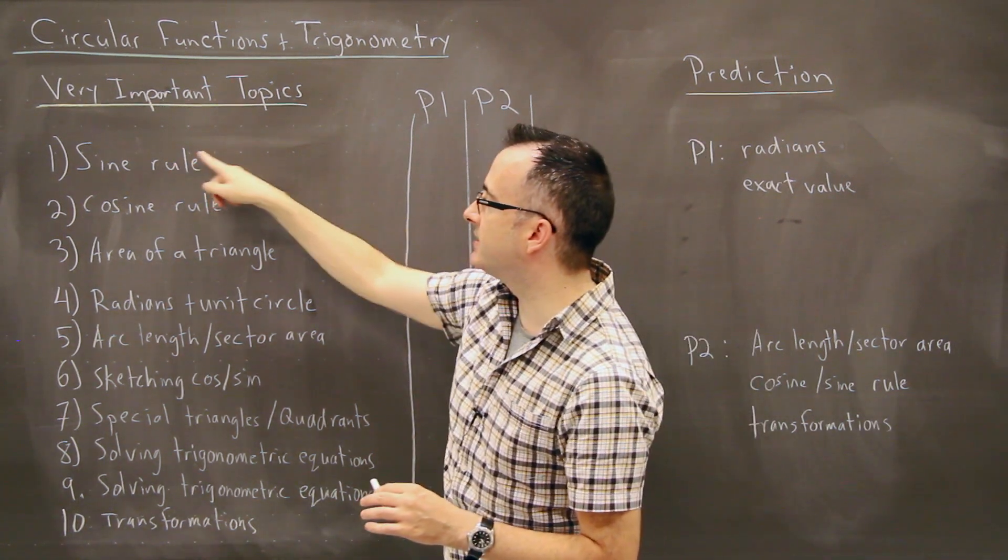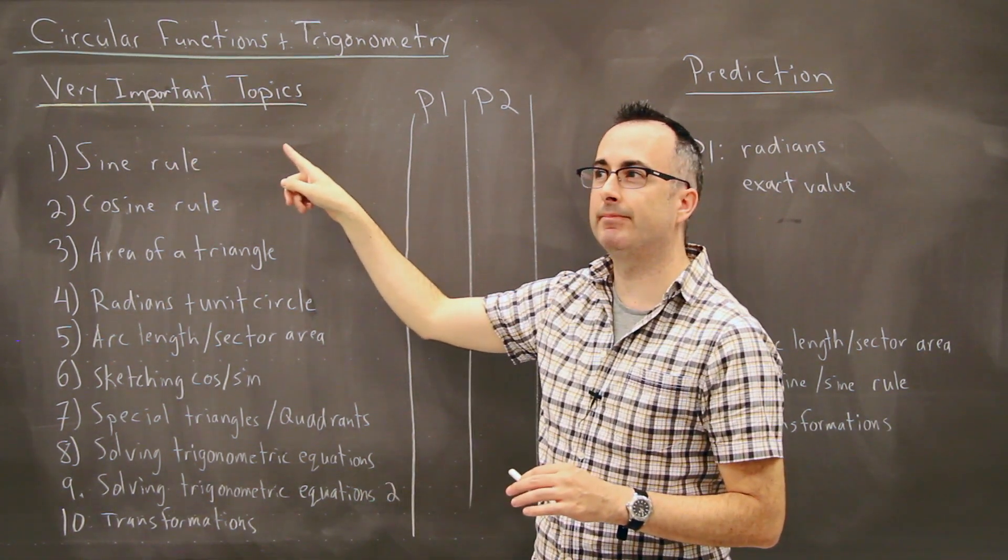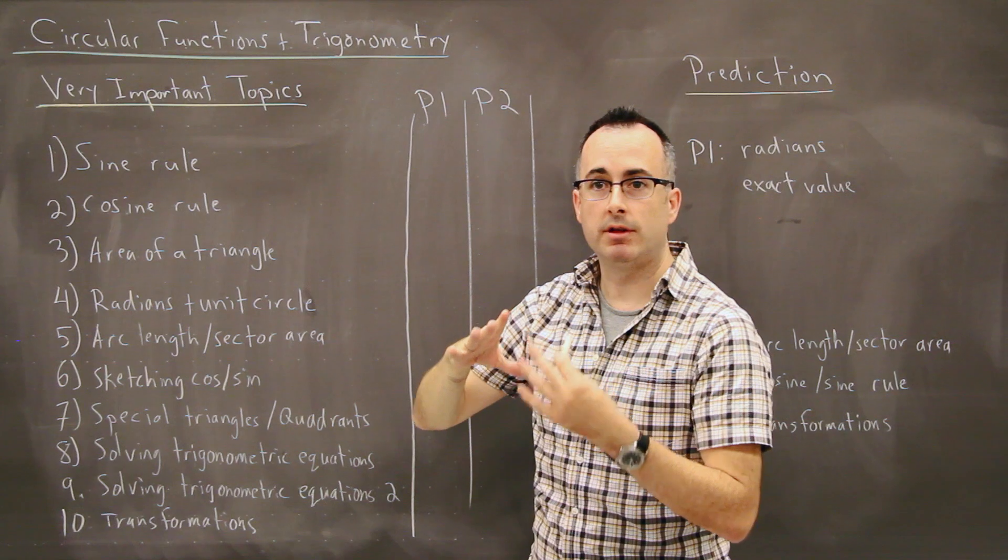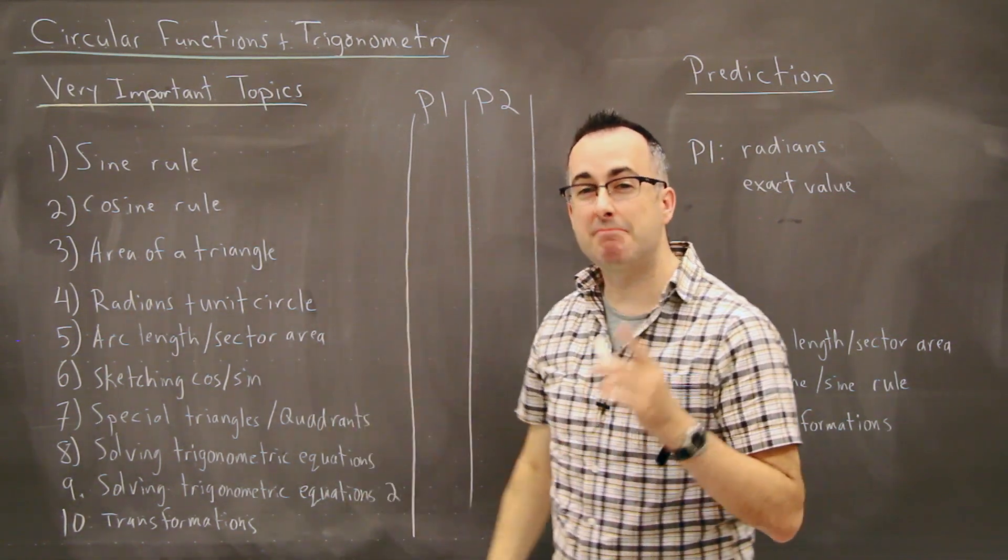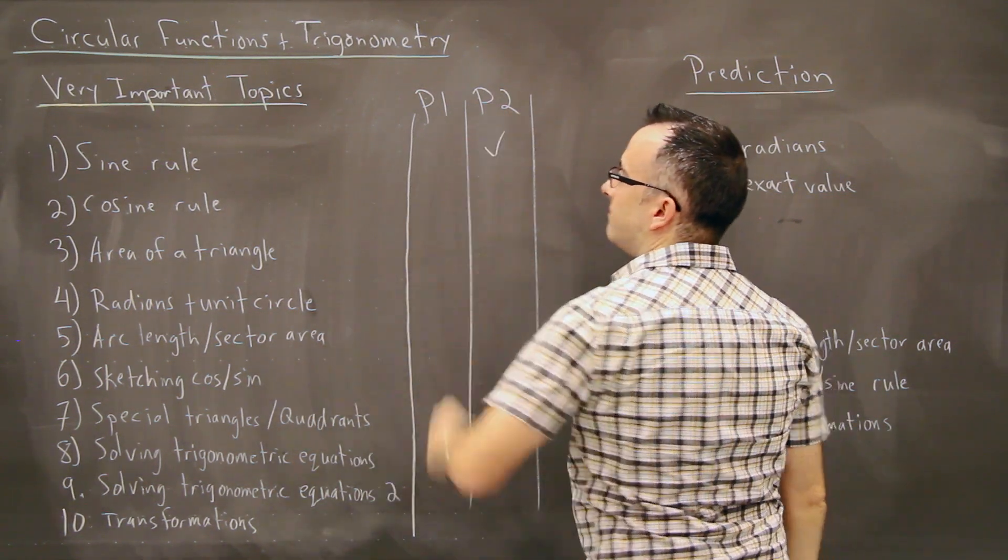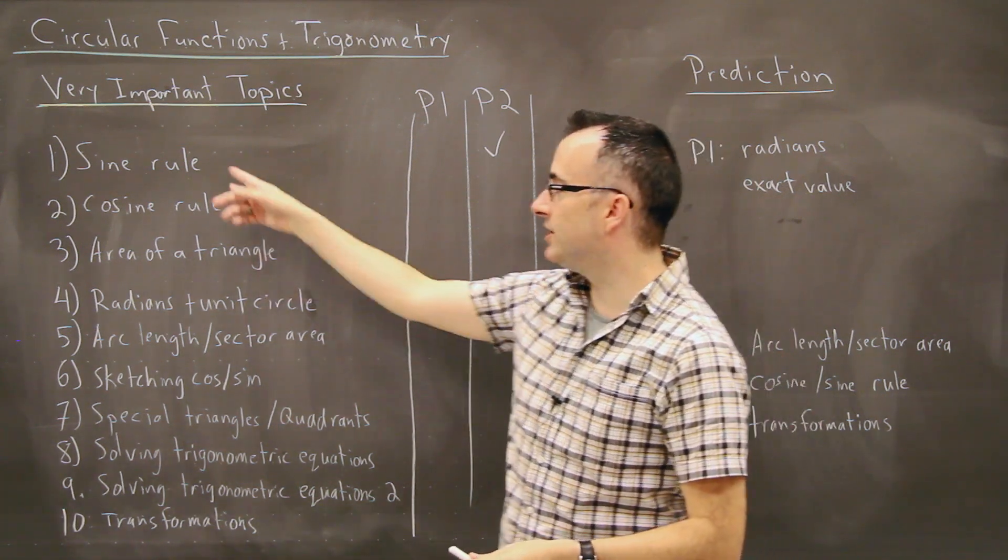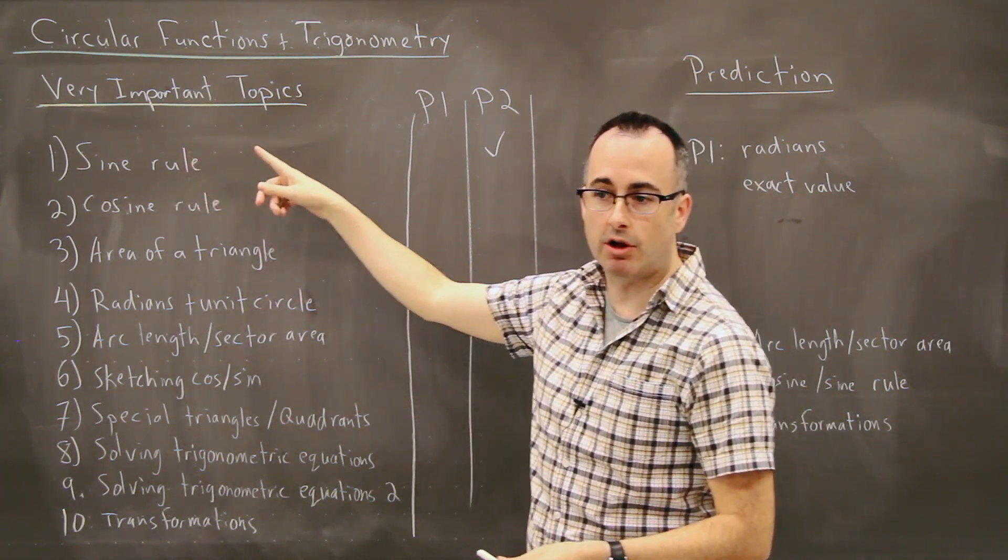However, sine rule, this is what we do in a non-right angle triangle. This is one of the simpler rules that we learn, and that one's mainly on paper two. It's pretty much only found on paper two. Makes sense, because you need a calculator for that one, because you need to solve for angles.